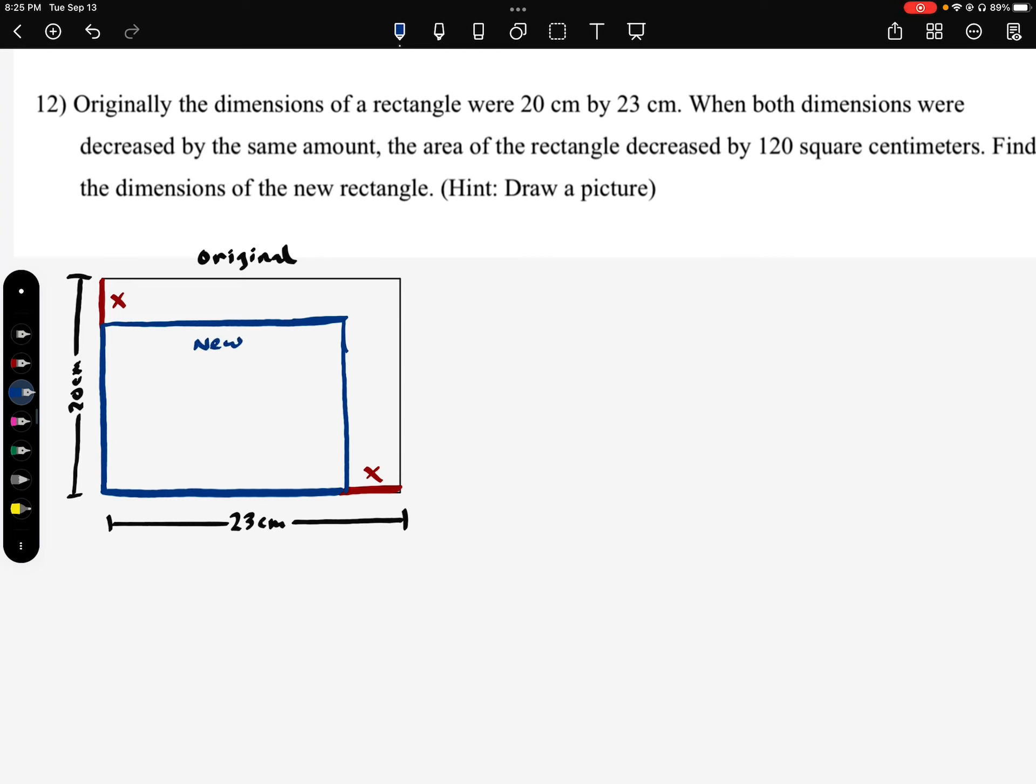Okay, so what ends up happening when we reduce it here, it reduces the area. So normally, when we have our original rectangle, when we talked about length times width equals area, right, so for our original, it was 20 times 23, or it could be 23 times 20, either way, which ends up being 460 square centimeters.